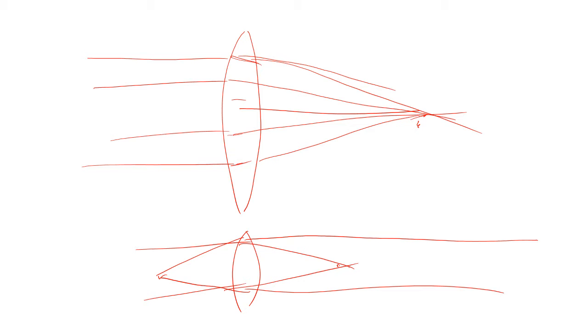For a thin lens, the same equation holds 1 over f equals 1 over do plus 1 over di that we had for a mirror. So this is the same. All right, so let's do an example.